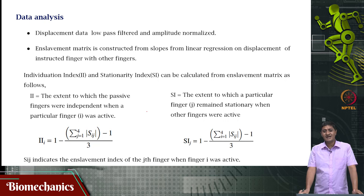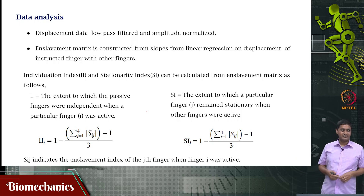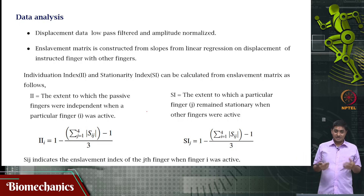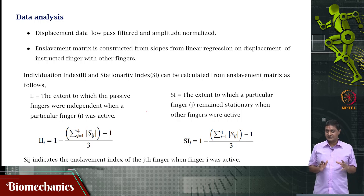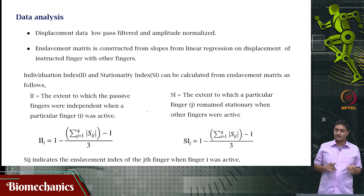Remember the difference between individuation index and stationarity index. Individuation is how much less I am influencing others — if my own actions do not influence others, my actions are individuated. Stationarity is how much less I am affected by others — if I do not care about what others are doing or saying, that is stationarity. If no one cares about my movements or actions, that is individuation. If I am not affected by what others are doing, that is stationarity.